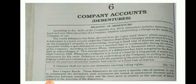Zero coupon bonds do not carry a specific rate of interest. In order to compensate the investor, these debentures are issued at a substantial discount, and the difference between the nominal value and the issue price is treated as the amount of interest related to the duration of the debenture. The interest rate is not fixed — the company compensates its investors by issuing the debenture heavily at a discount.